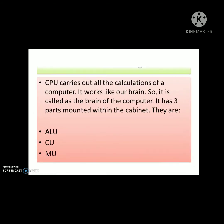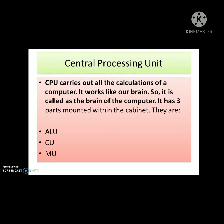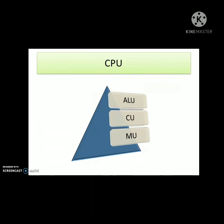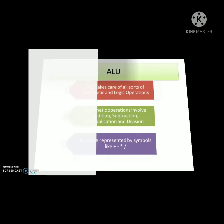The central processing unit carries out all the calculations of a computer. It works like our brain, so it is called the brain of the computer. It has three parts mounted within the cabinet: ALU — arithmetic logic unit, CU — control unit, and MU — memory unit.